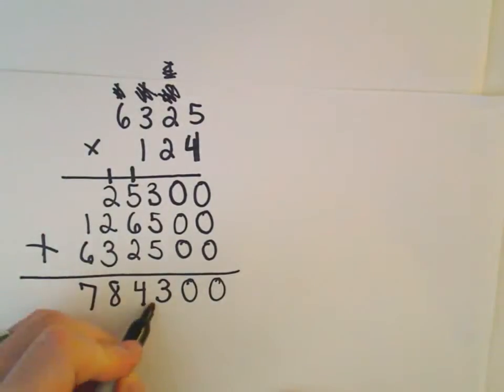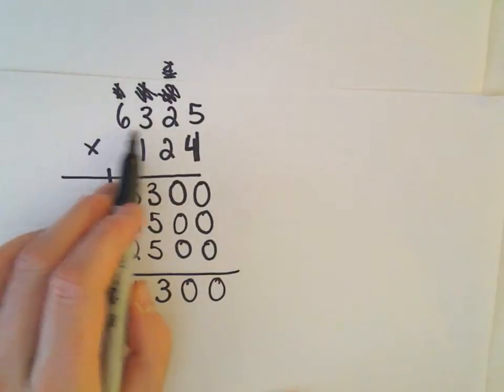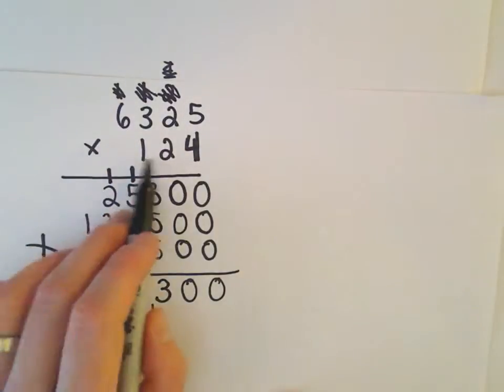So if we multiply 6,325 by 124, we'll get 784,300.